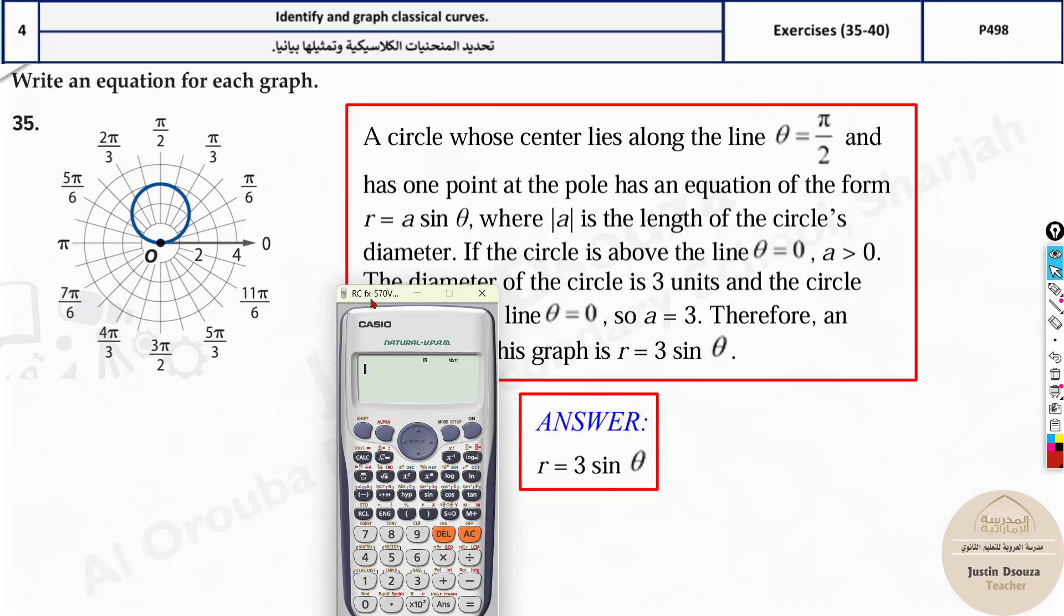Now look into your four options. Here we have the answer r equals 3 sine theta, but you will have four options. You will have 2 sine and 2 cosine. Looking at this, since it's above, you must eliminate all the cosine options. Only sine can be the options. Let's go to mode and table.